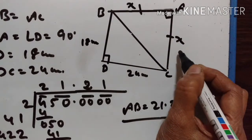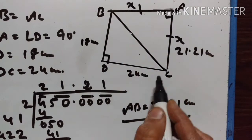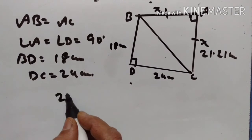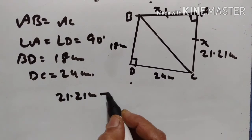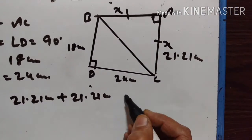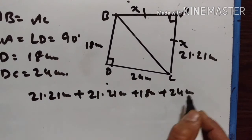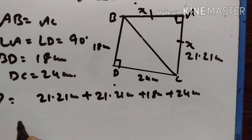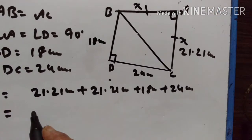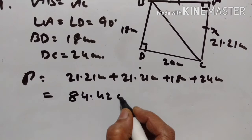Since AB equals AC, AC is also equal to 21.21 centimeters. So the perimeter of quadrilateral ABCD is equal to AB plus AC plus BD plus DC, that is 21.21 plus 21.21 plus 18 plus 24, which gives us 84.42 centimeters.